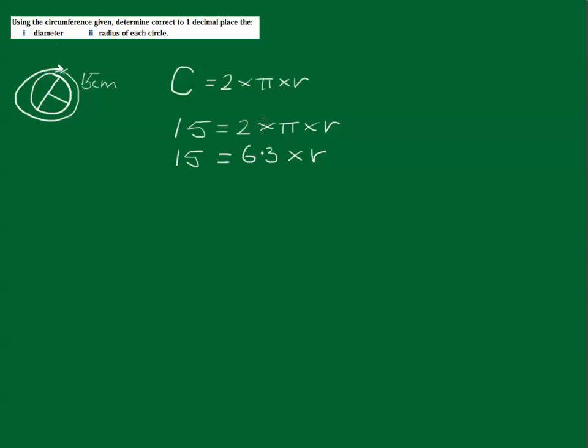Now what we need to do, because 2 and π are just numbers, we need to get rid of this 6.3 because we want to find the radius. So what we're going to do is divide both sides by 6.3. Why do we divide? Because at the moment it's being multiplied, and whatever we do to one side we need to do to the other. Okay, so I'm going to divide by 6.3. Now 6.3 divided by 6.3 is 1, and you end up with 1 times r.